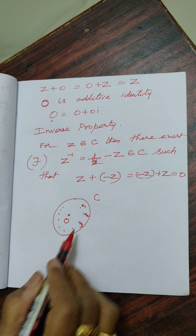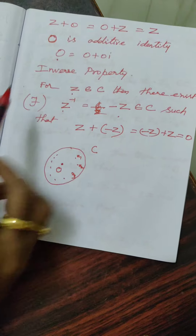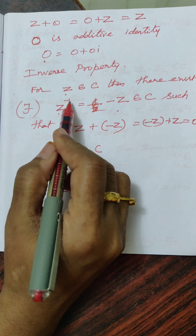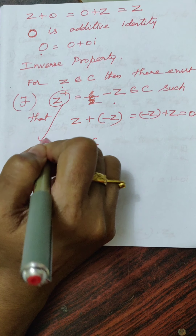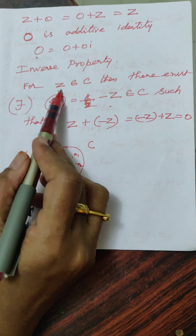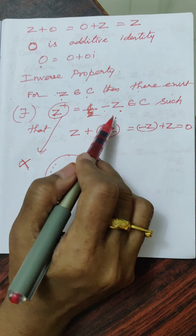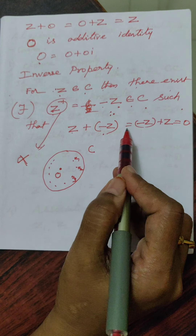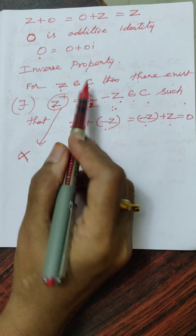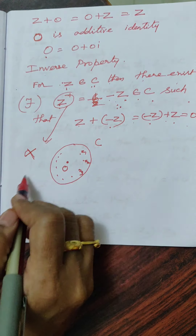Note carefully: Z bar is wrong for additive inverse — Z bar is applicable only for multiplicative inverse. For the inverse property of addition: for Z belonging to C, there exists minus Z (the negative of Z) belonging to C such that Z plus (minus Z) equals (minus Z) plus Z equals 0. The additive inverse is minus Z, not Z bar.